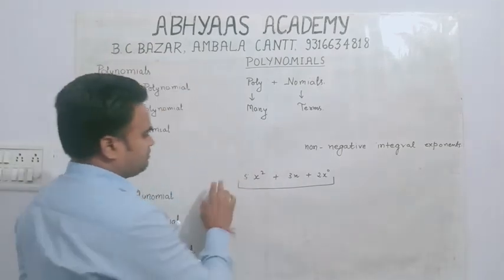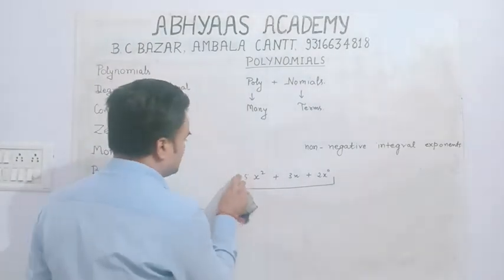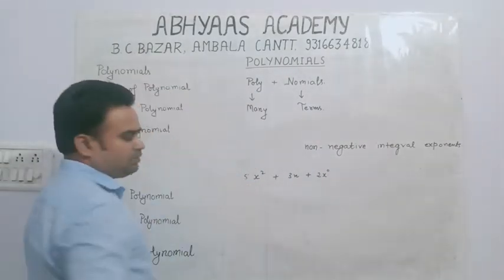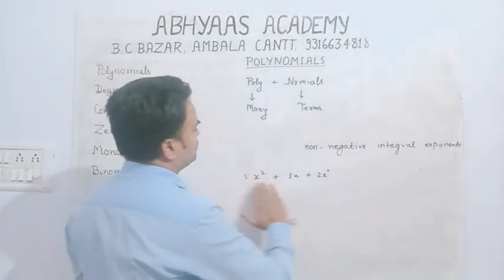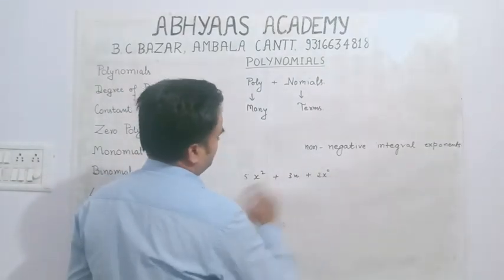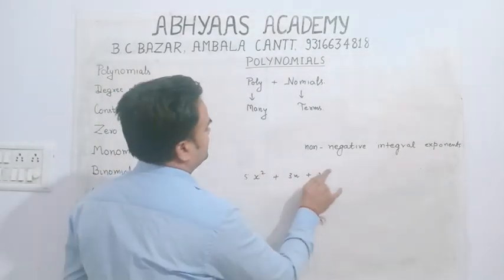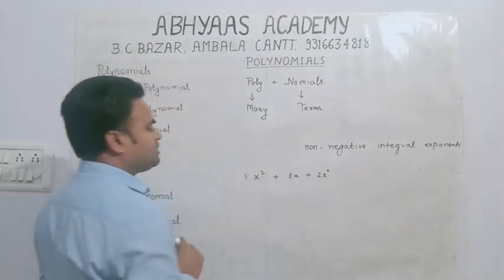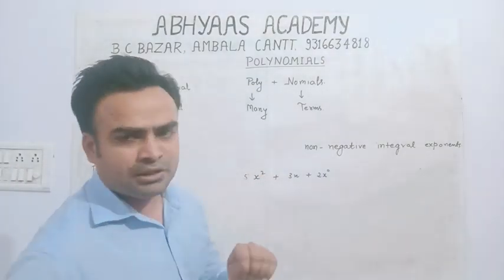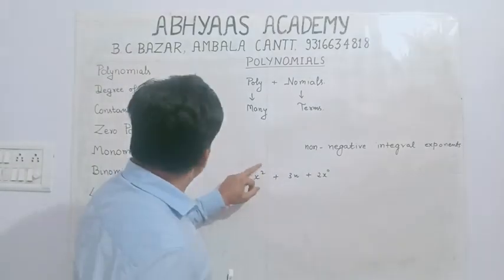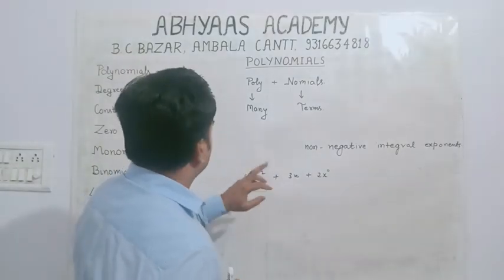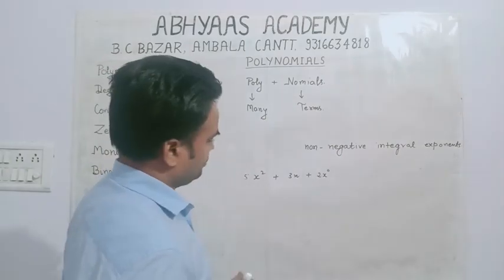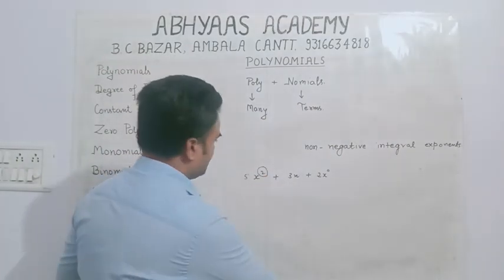तो यह तो definition थी polynomial की। अब next topic है degree of polynomial। जो भी polynomial दिया है, उसमें देखो कि variable की highest power कितनी है। जैसे यहाँ पे variable x है — power 2 है, यहाँ 1 है और यहाँ 0 है। The highest power of the polynomial is called the degree of the polynomial। तो 2 is the degree of this polynomial।